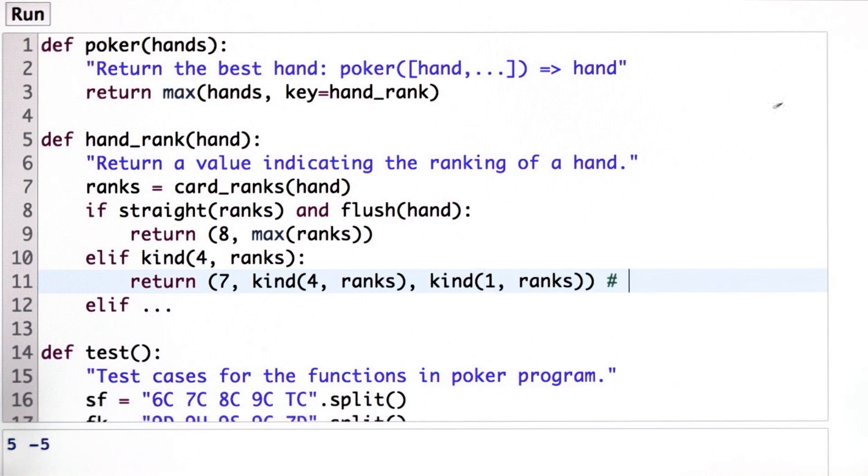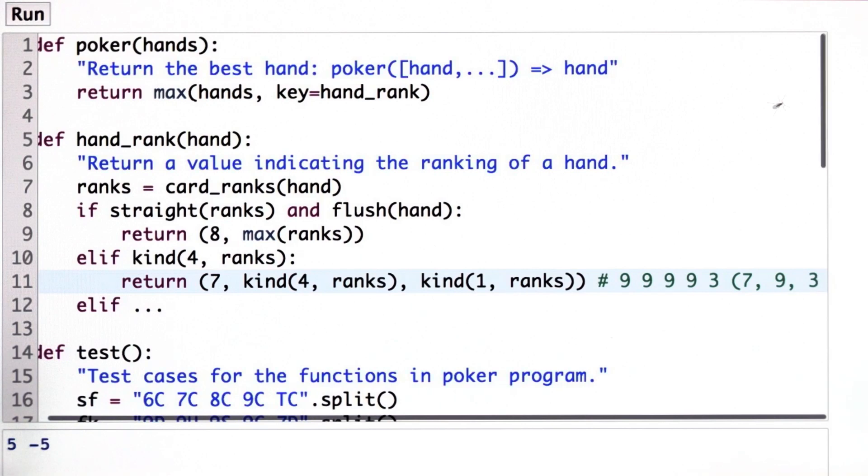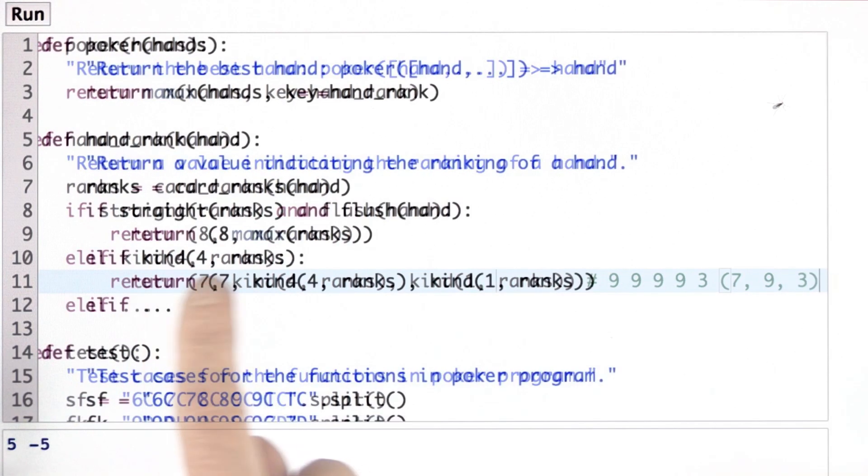say if you had a hand that had 4 9s and a 3, then our value would be 7 meaning 4 of a kind, 9 meaning you have 4 9s, and then 3 meaning that's the final tiebreaker.